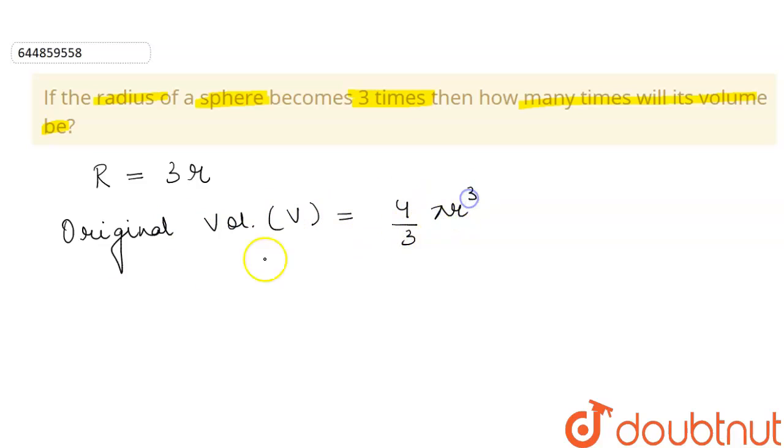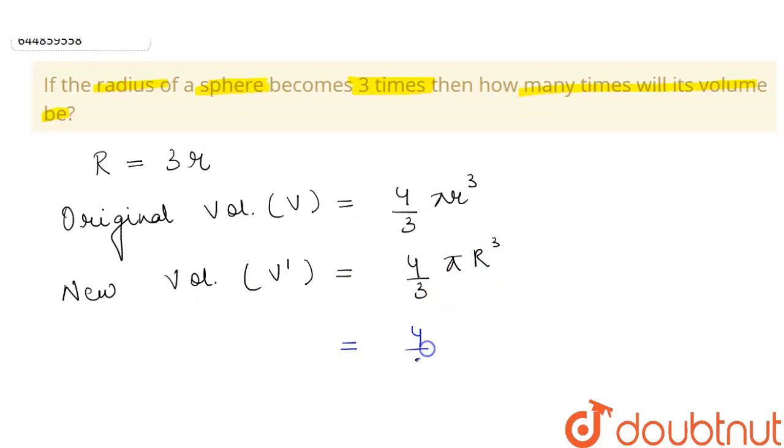And let the new volume, we represent this by V dash, be equal to four by three pi capital R cube. So this will be equal to four by three pi.